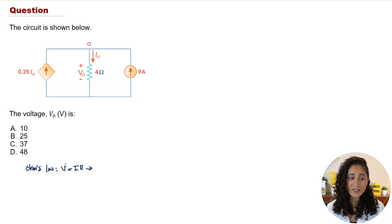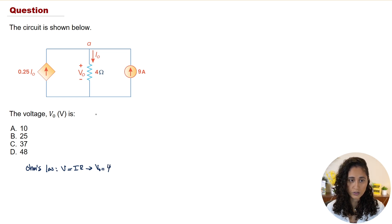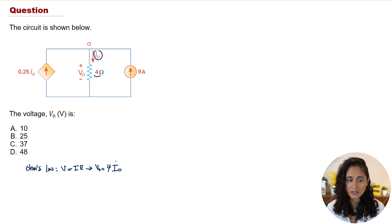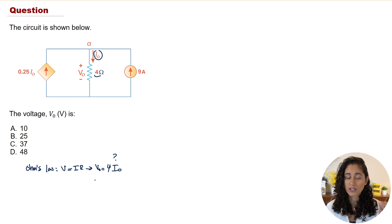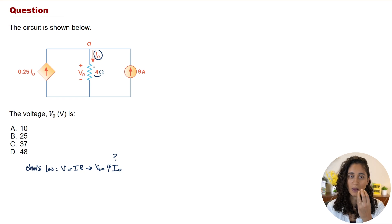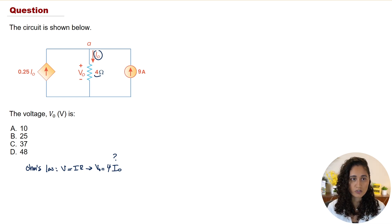Let's apply Ohm's law first: V_naught = 4 × i_naught, where 4 is the resistor value and i_naught is the current going through it. As you can see from this equation, we can't determine V_naught because we don't have the current. This is where KCL comes in — we'll use KCL to determine i_naught, and once we have the current through the resistor, we can determine the voltage.